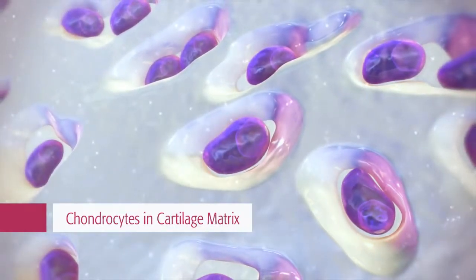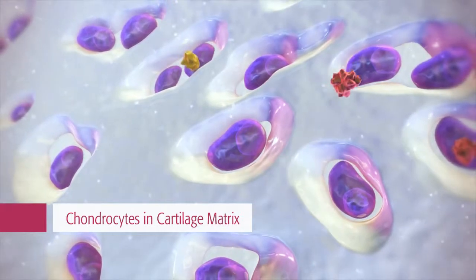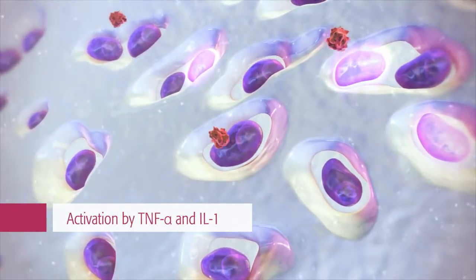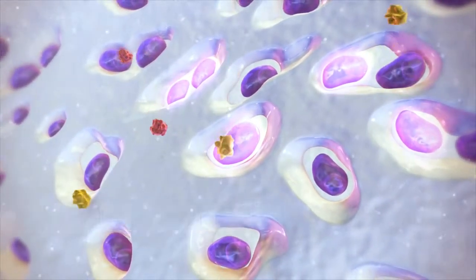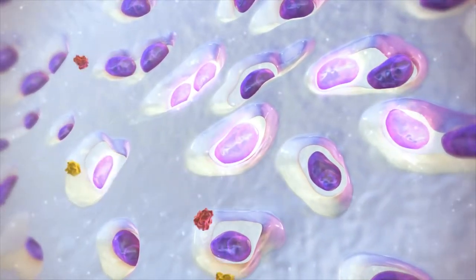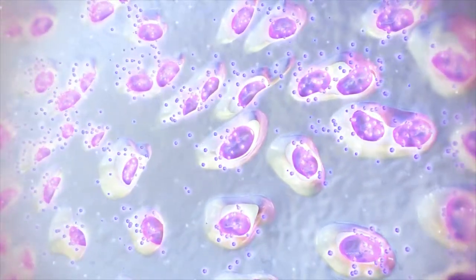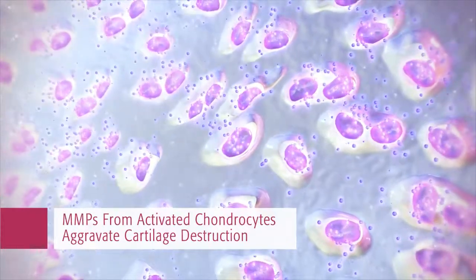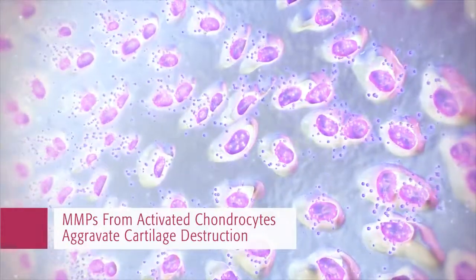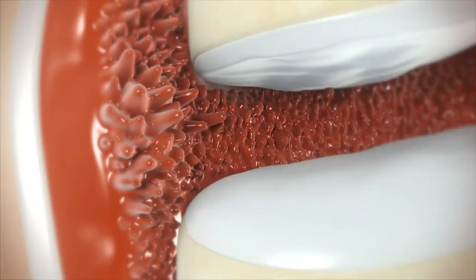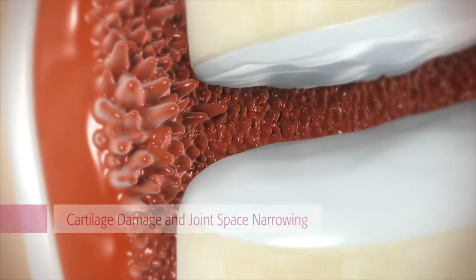Chondrocytes are the main cellular component of cartilage and normally produce the extracellular matrix. However, in response to stimulation by TNF-alpha, IL-1, and other inflammatory mediators, chondrocytes become activated in the rheumatoid joint. Activated chondrocytes secrete more inflammatory factors and more metalloproteinases (MMPs), which aggravates inflammation and cartilage damage. The cumulative result is irreversible cartilage damage and joint space narrowing.